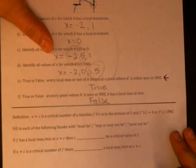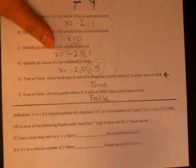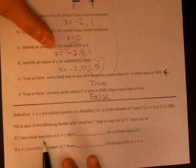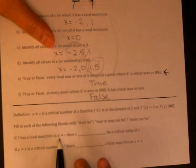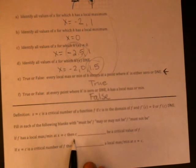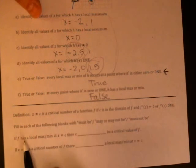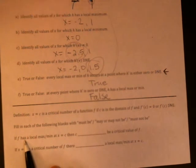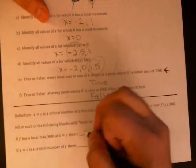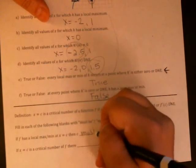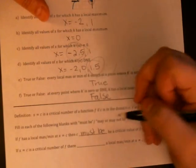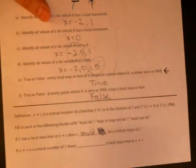So based on that we want to fill in the next couple with a must be, may or may not be, or must not be. So if you want to pause really quick and see if you can figure this out. If f has a local maximum or min at x equals c then c must, may, or must not be a critical value. Okay so we decided the maxes and mins in our picture always happened at critical values so I'm going to say this is a must be and it is. Must, I guess the be is already there.